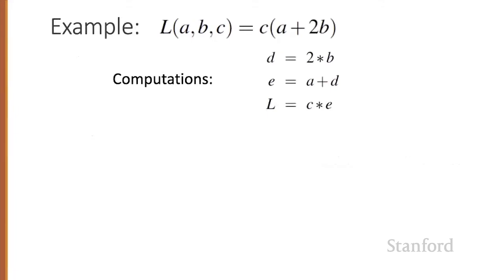Consider computing the simple function L of A, B, C equals C times A plus two B. If we make each of the component addition and multiplication operations explicit and give names to the intermediate outputs, the resulting series of computations is: D equals two times B, E equals A plus D, and L equals C times E. We can now represent this as a graph with nodes for each operation and directed edges showing the outputs from each operation as the inputs to the next.